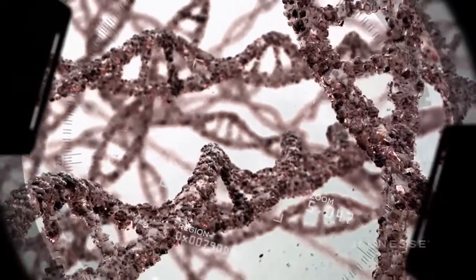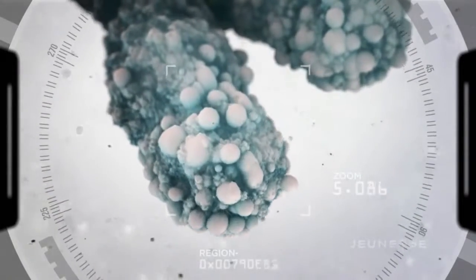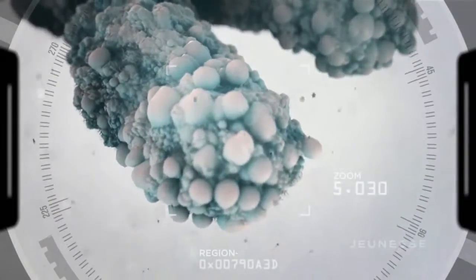Telomeres are made of repetitive DNA sequences that become the protective caps or ends of our chromosomes. Their duty is to protect our DNA.